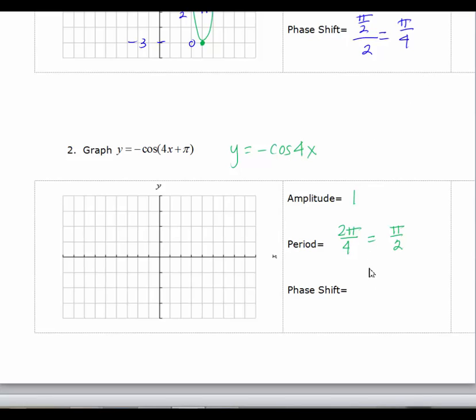And then our phase shift is going to be negative because we're adding the pi. And it's going to be c over b. So c is equal to pi, b is equal to 4. So our phase shift is pi over 4.